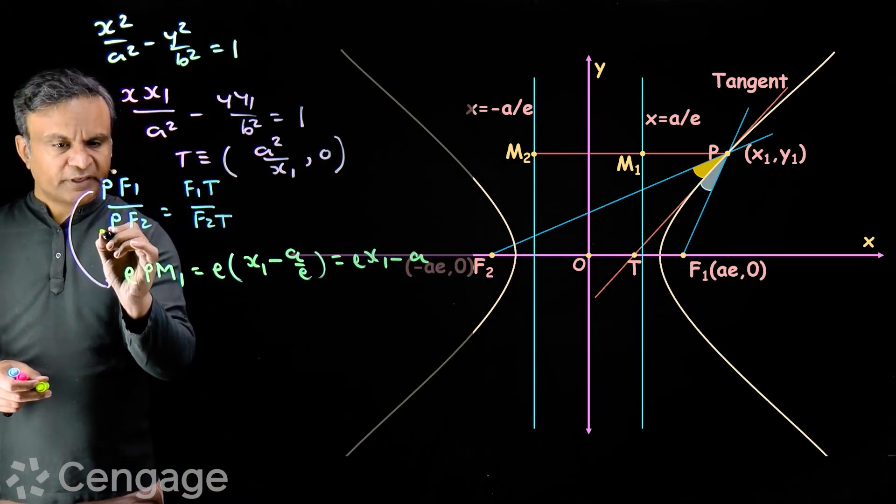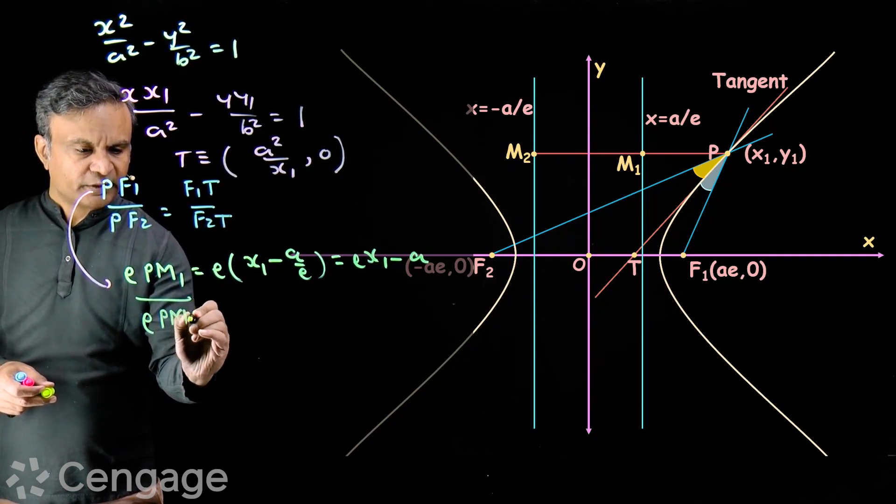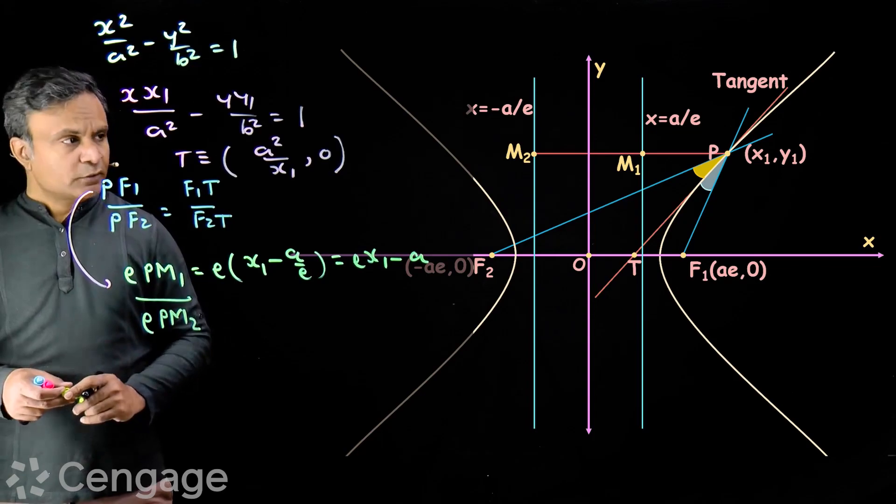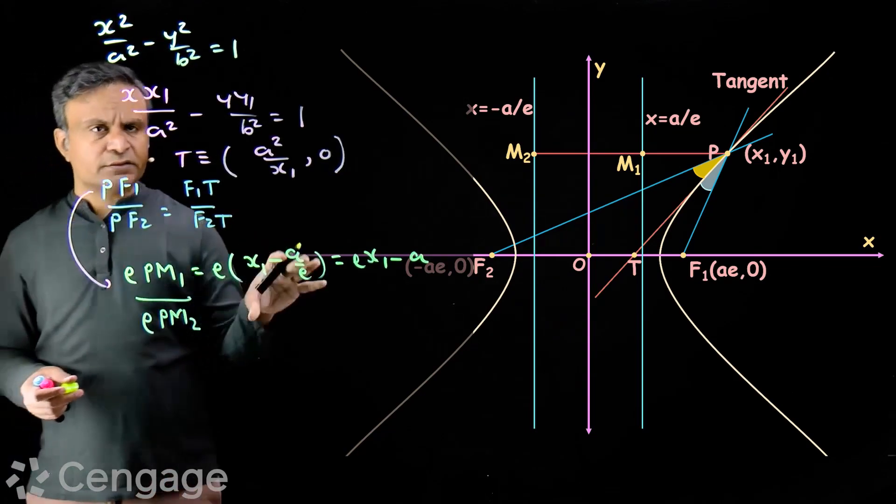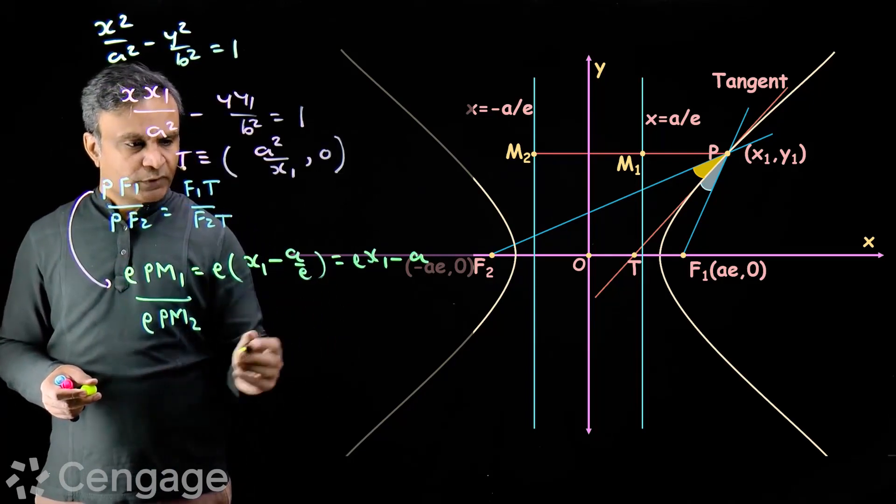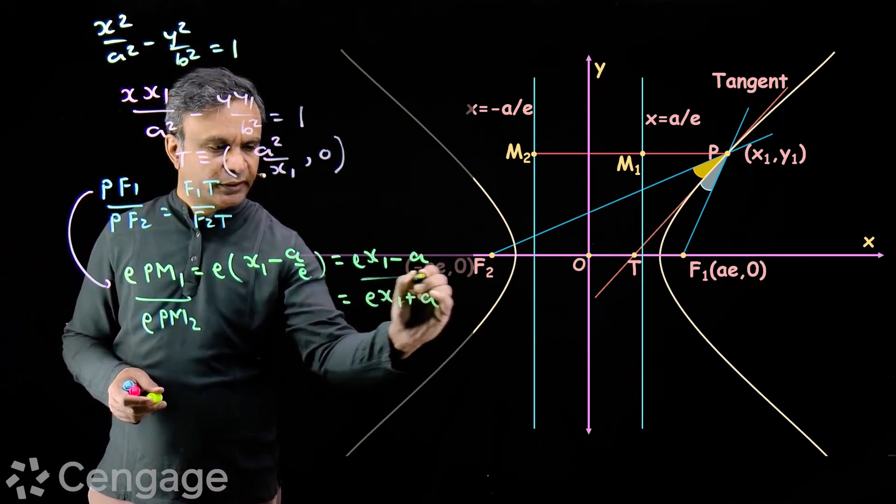Similarly, we get PF2. What will be PF2? PF2 will be e multiplied by PM2. Where M2 is foot of perpendicular from point P on the directrix x is equal to minus a over e. And this will be ex1 plus a.